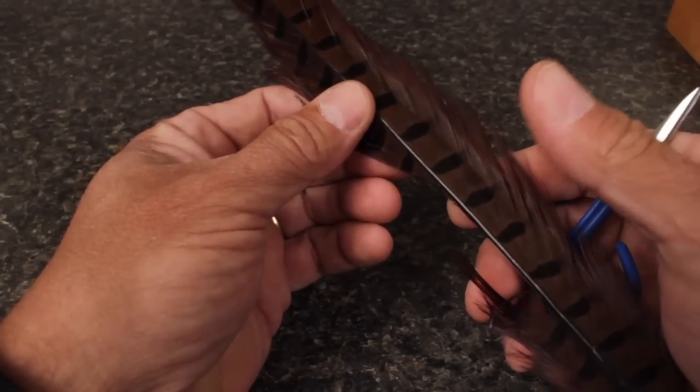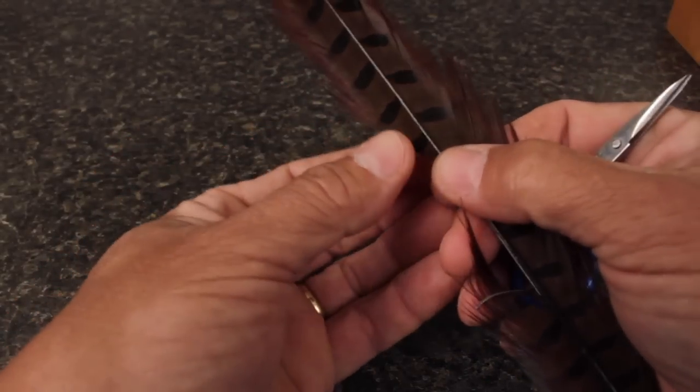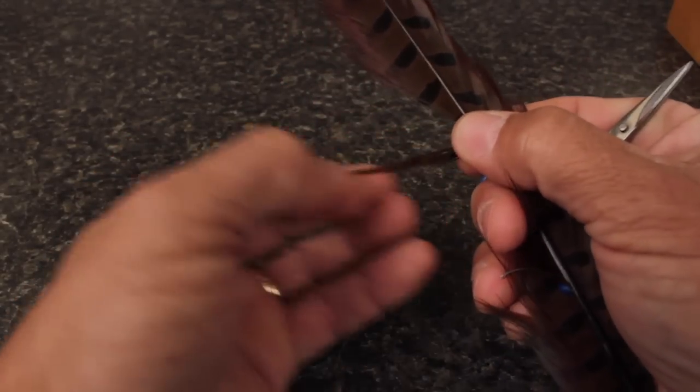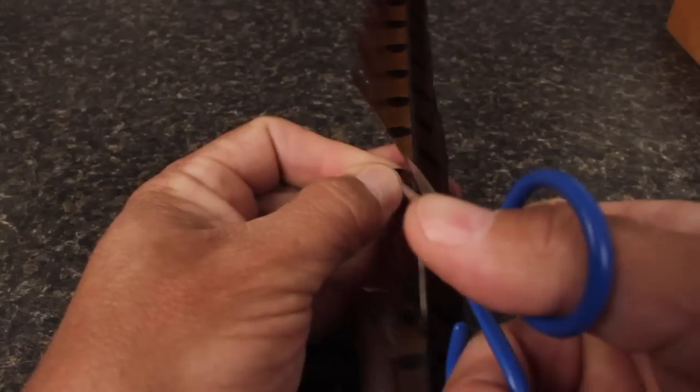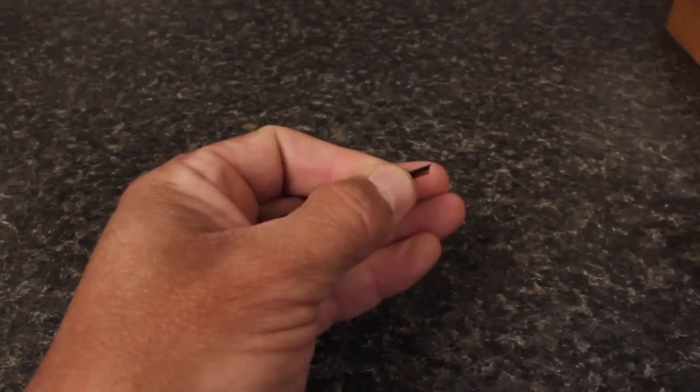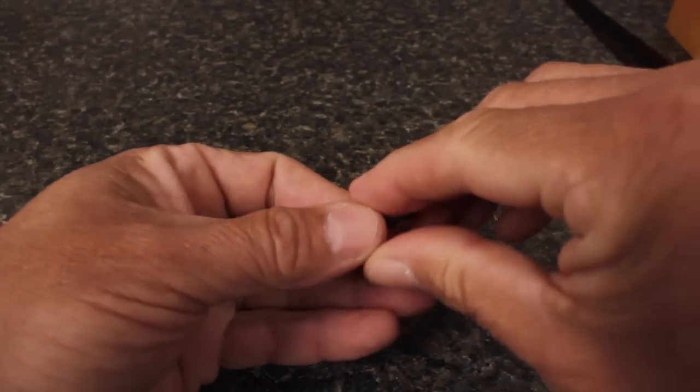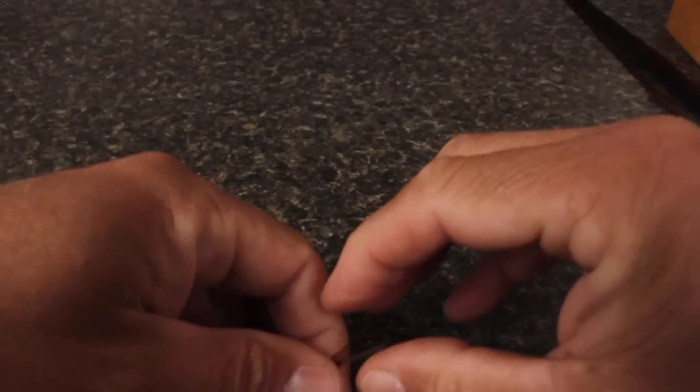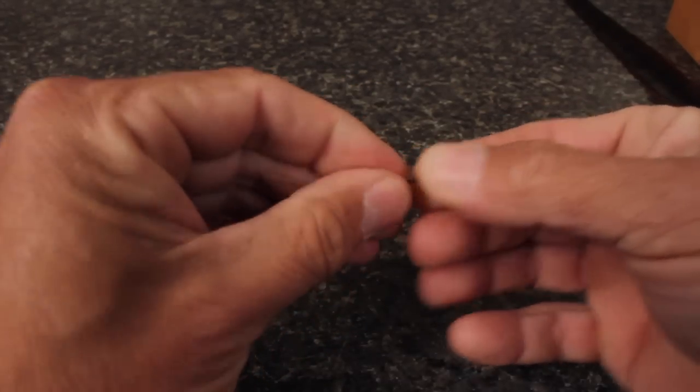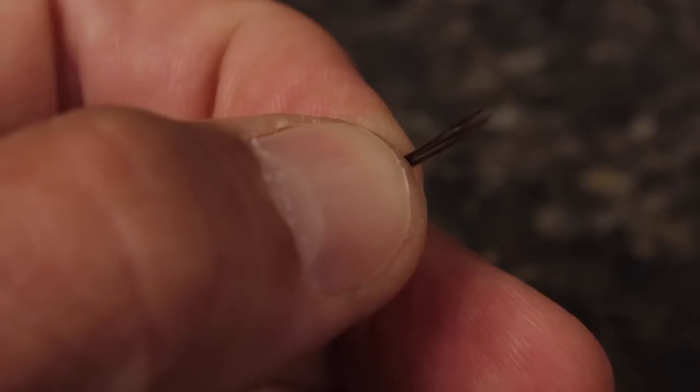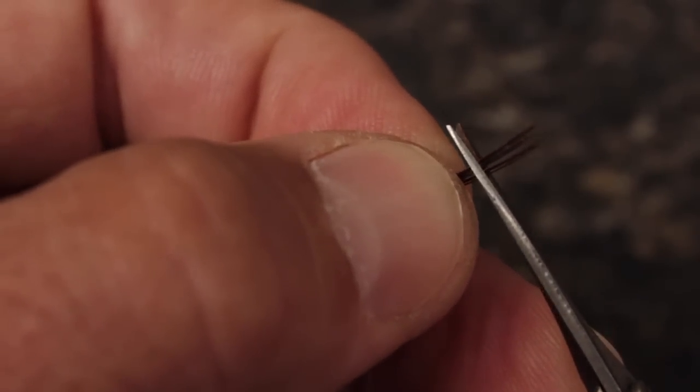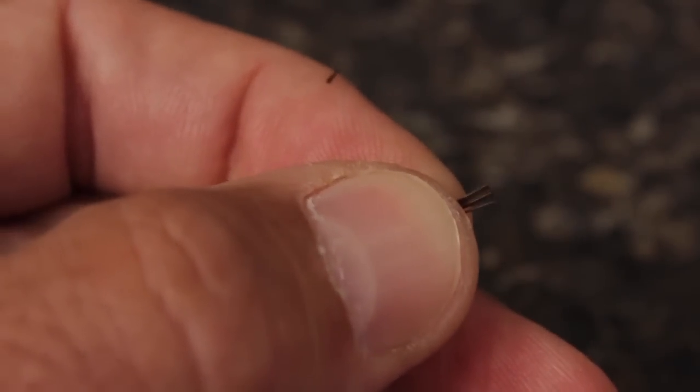For the body of the fly, I'm going to use pheasant tail fibers dyed dark brown, but the color is entirely up to you. Snip or strip eight or so fibers free from the stem and then turn them around so just the very fine ends protrude from your fingertips. Snip these off square and then place them right behind the bead on top of the hook shank.